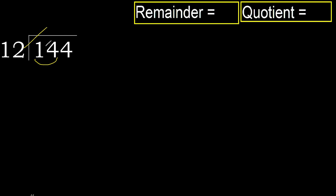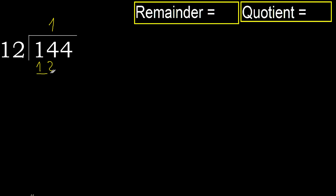12 multiplied by 1 is 12, it is not greater. Ok, subtract: 14 minus 12 equals 2.